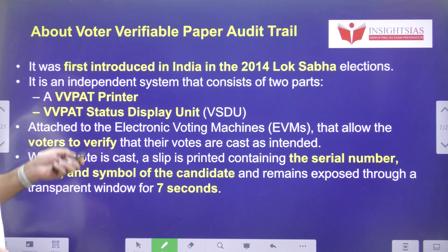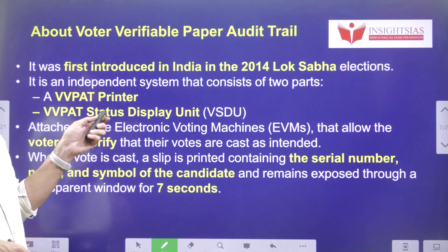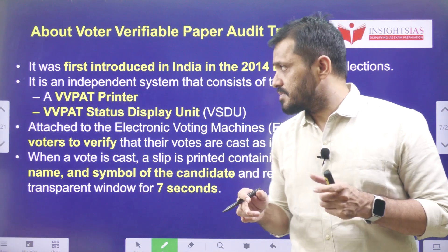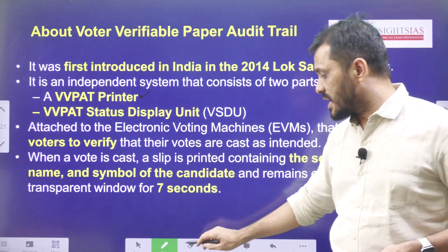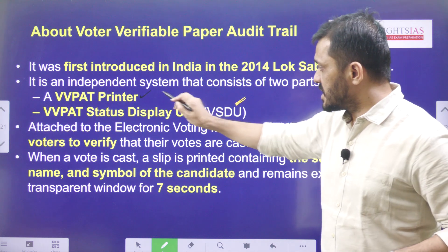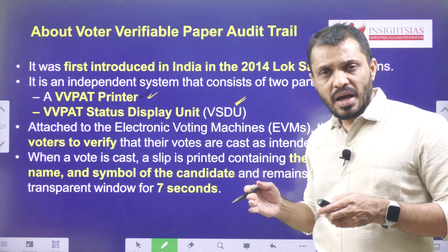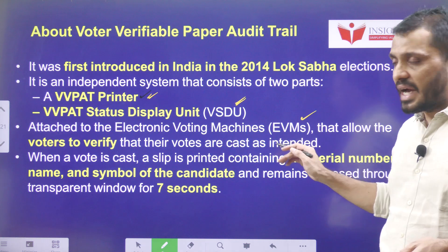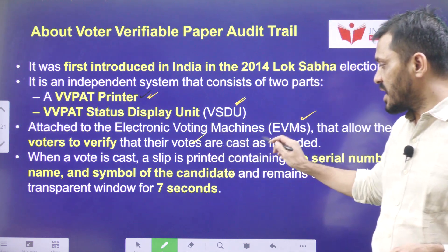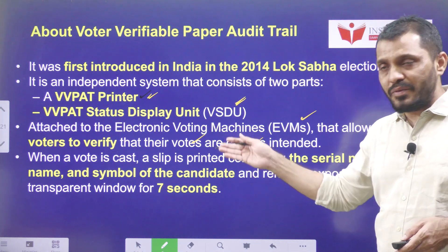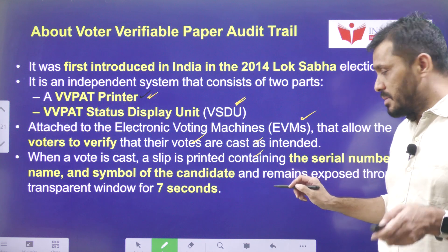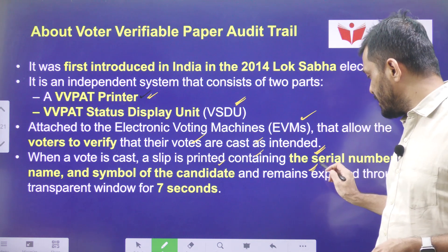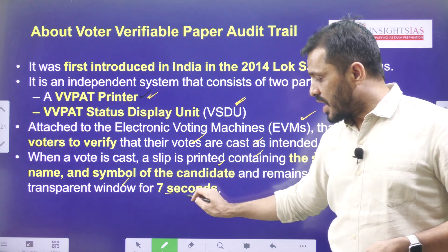VVPAT was first introduced in India during the Lok Sabha 2014 elections in an experimental manner. VVPAT includes two parts: first, the printer; and second, the status display unit. The display unit shows the candidate name, serial number, and symbol. This VVPAT machine is attached to the EVM and allows the voter to verify their vote is cast as intended. When the vote is cast, the print contains the serial number, name, and symbol of the candidate and remains exposed through the transparent window for 7 seconds.